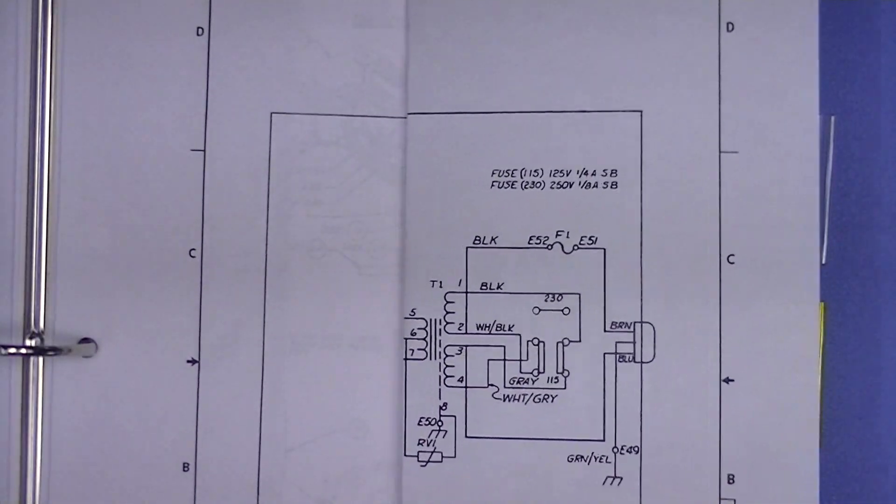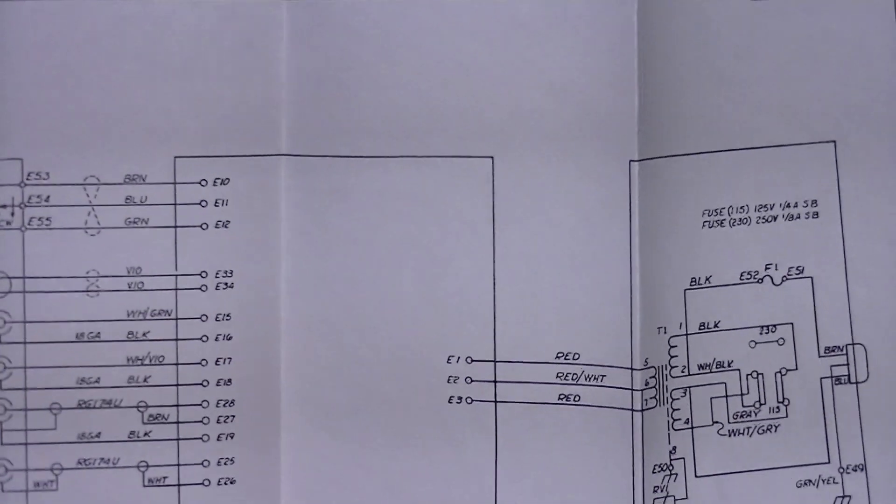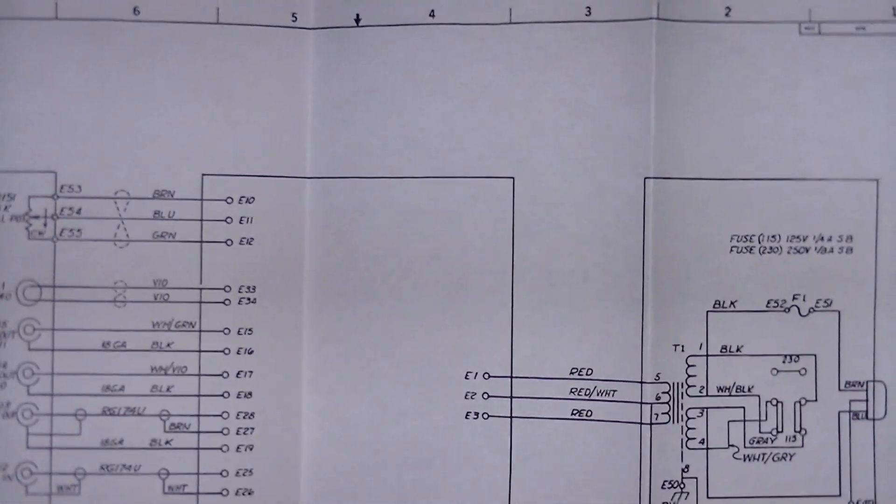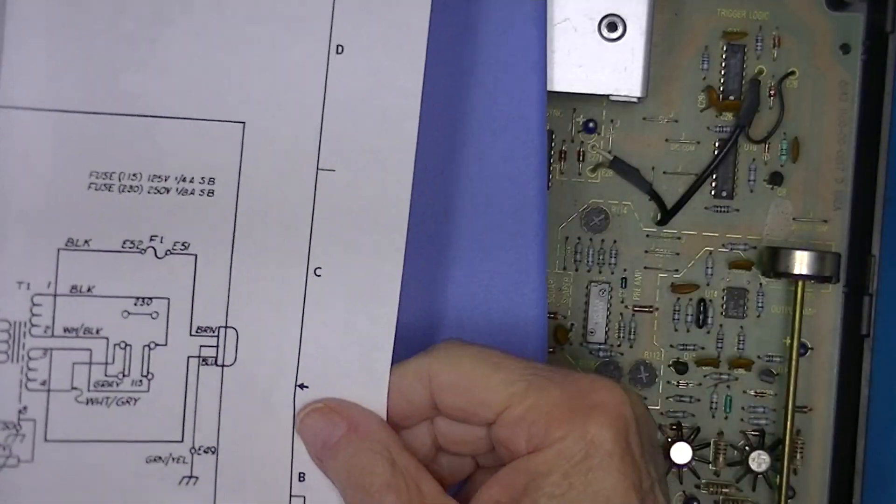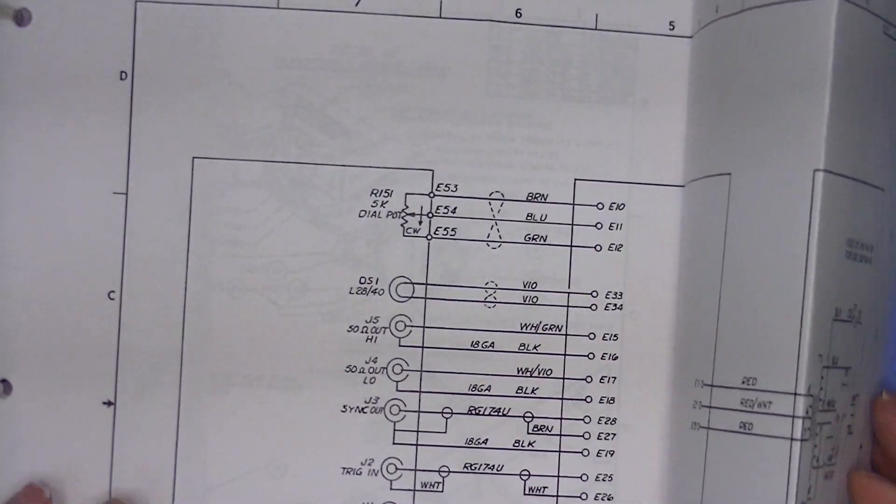Now, this manual, as well as the one for the 182, has some 17 by 11 or 11 by 17 fold out sheets, which are well worth having even if you have to pay for the printing of them.